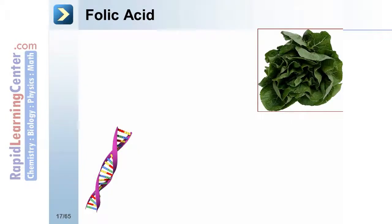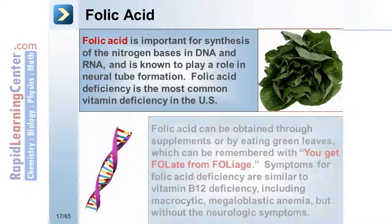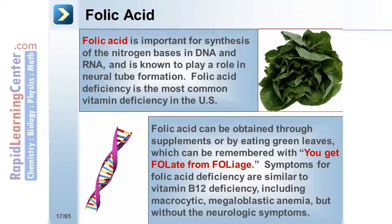Folic acid is important for synthesis of the nitrogen bases in DNA and RNA, and is known to play a role in neural tube formation. Folic acid deficiency is the most common vitamin deficiency in the United States. It can be obtained through supplements or by eating green leaves — remembered with the mnemonic 'you get folate from foliage.' Symptoms are similar to vitamin B12 deficiency, including macrocytic megaloblastic anemia, but without the neurologic symptoms.